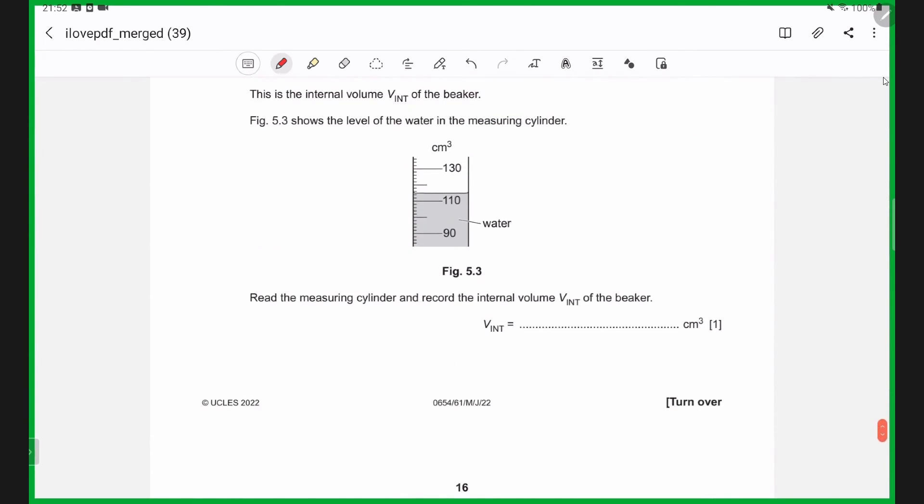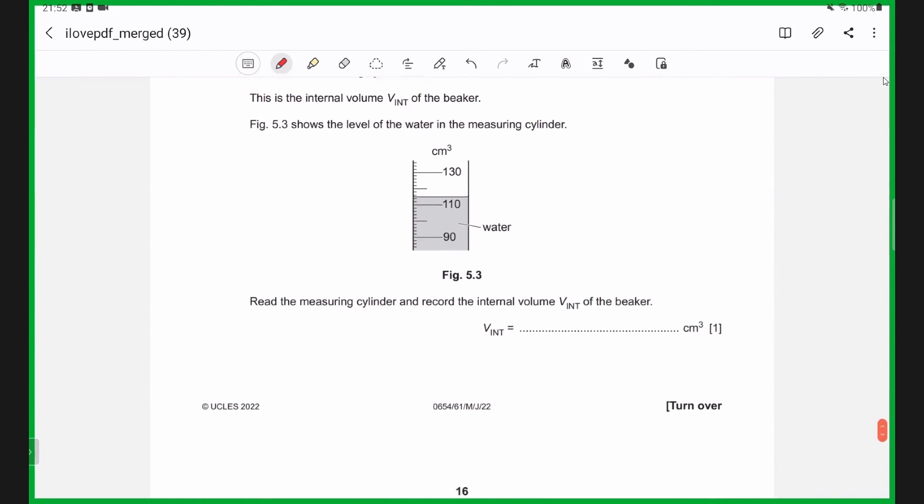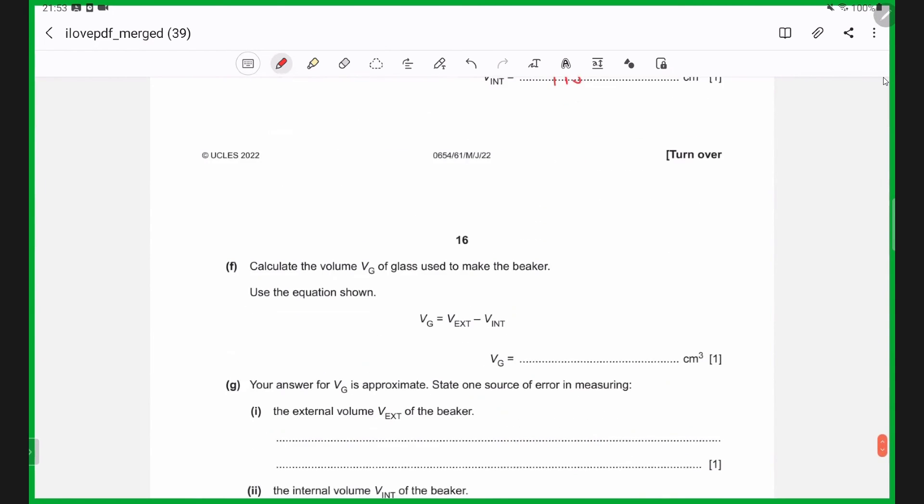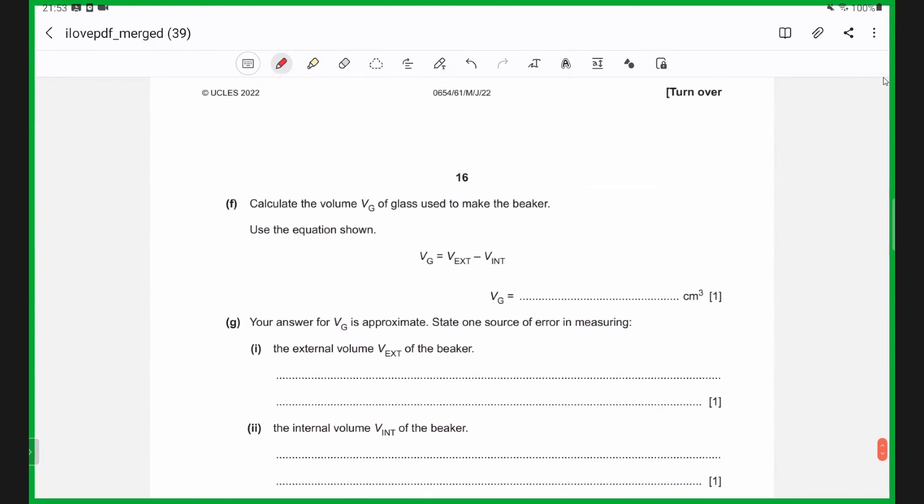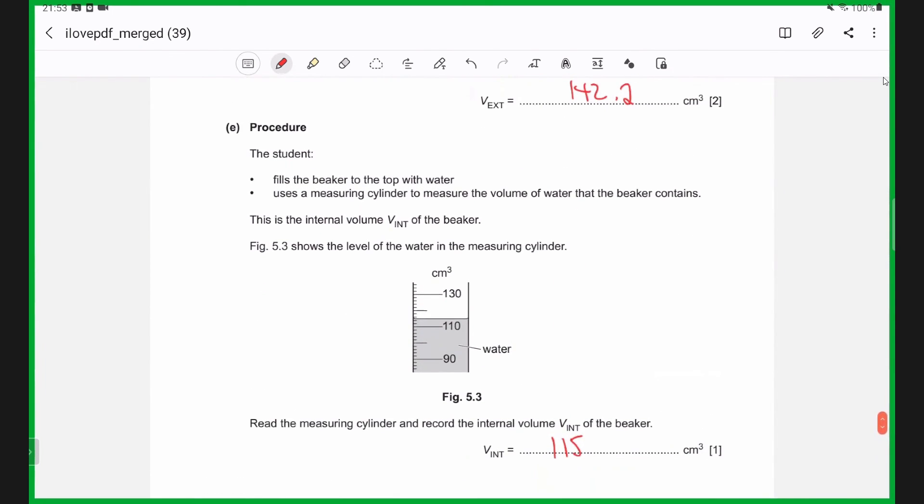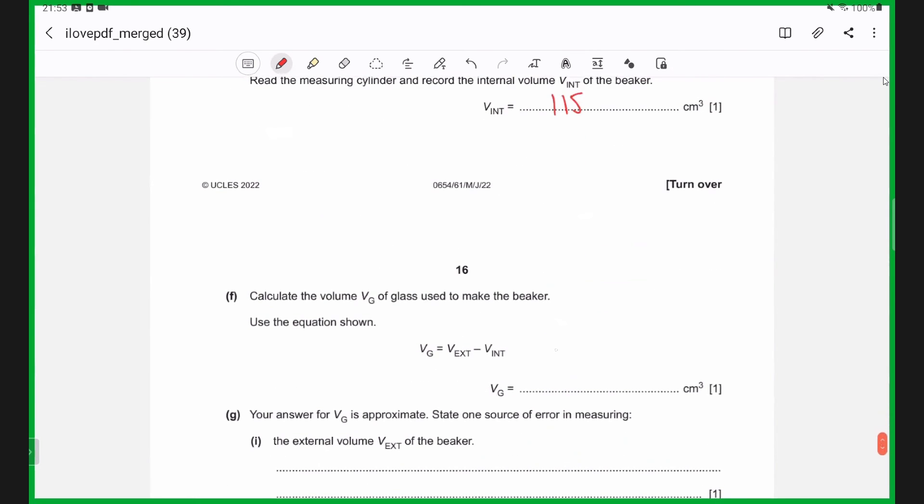Lastly, we're going to measure the internal volume of the beaker using the measuring cylinder. So we fill the beaker with liquid first, pour the liquid into the measuring cylinder so that we get the amount of liquid, or the internal volume of the beaker. And this should give us around, you can see from the scale, here it's 110 to 130. Again, it goes up in twos, so it should be 110, 112, 114, 115 cm cubed. Next, we're going to do V exterior minus V interior, which equals to 142 minus 115, which should give us around 27 cm cubed.